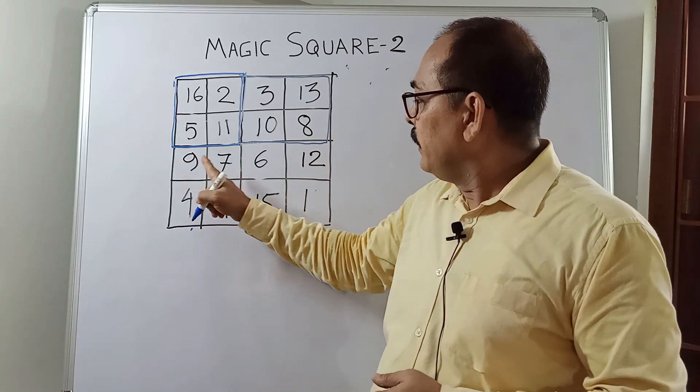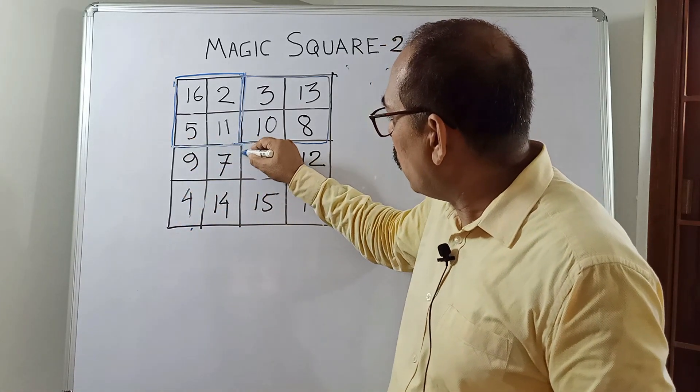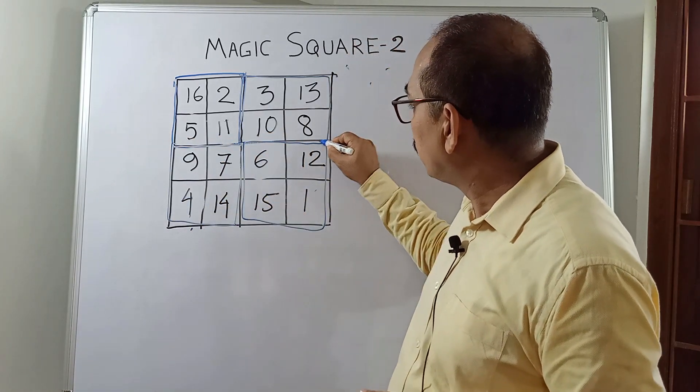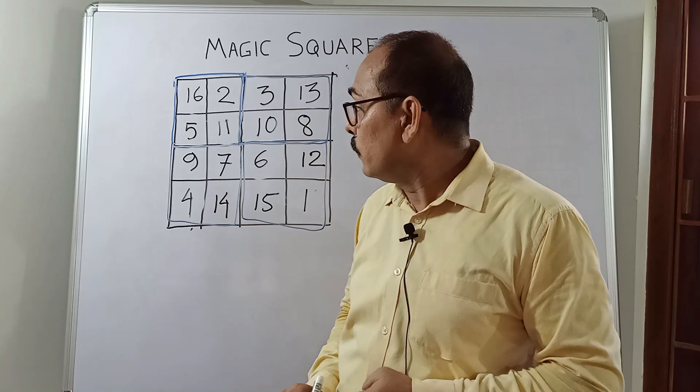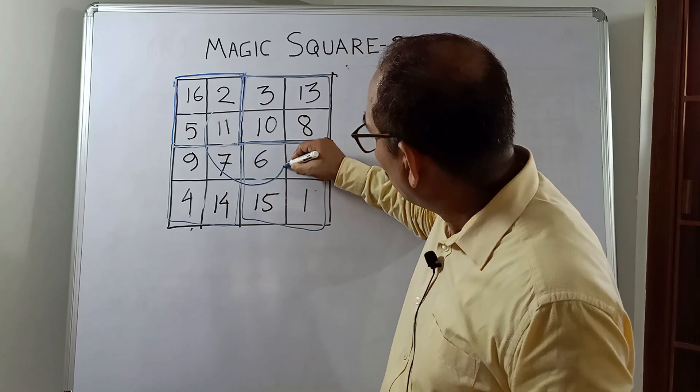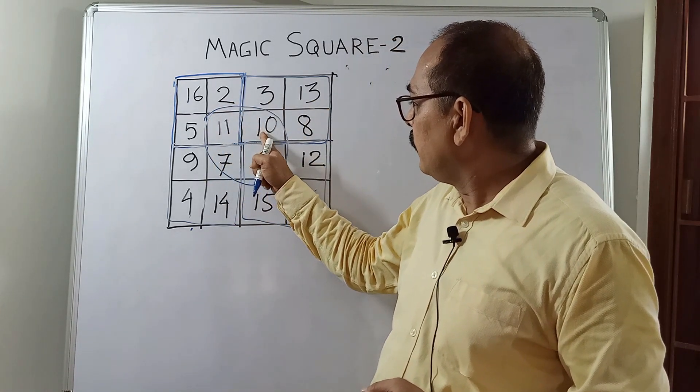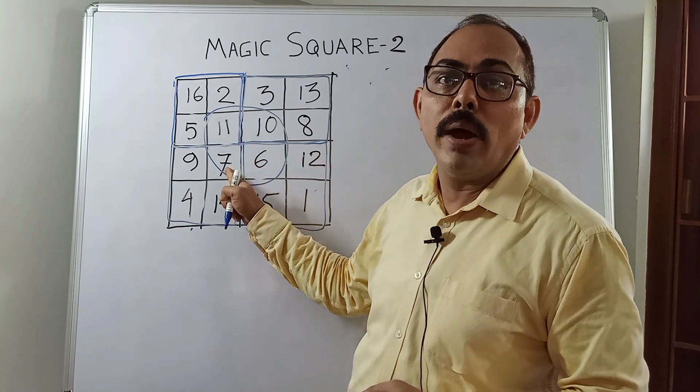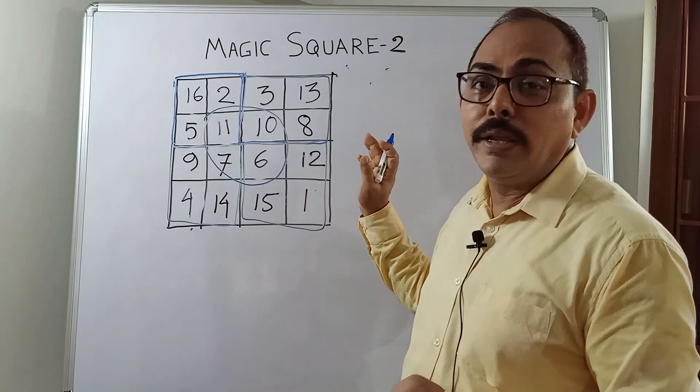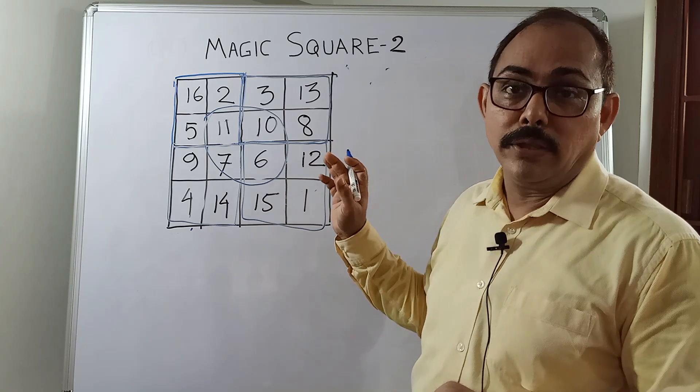Now the sum of 9, 7, 14, and 4, it is also 34. So all the four numbers of these squares will give you the same sum, that is 34. One more thing. If you take only the middle portion, that portion, 11, 10, 6, and 7, if you add, that will also give you 34. So this is a very important and interesting property of 4 by 4 order magic square.